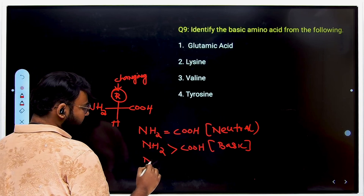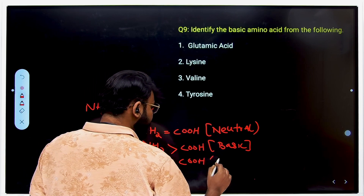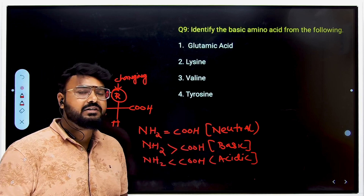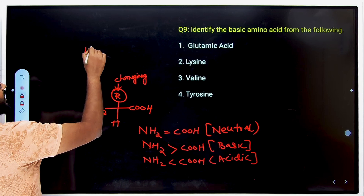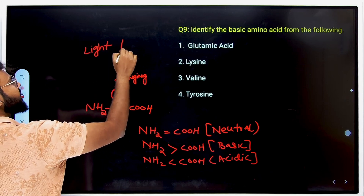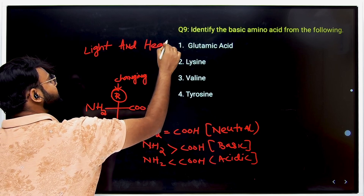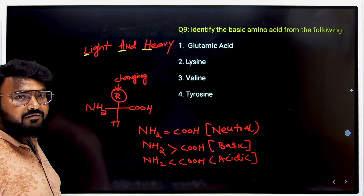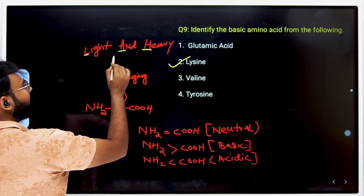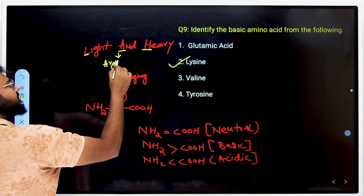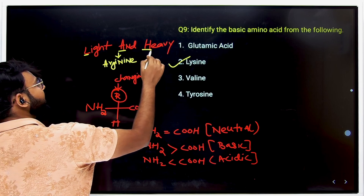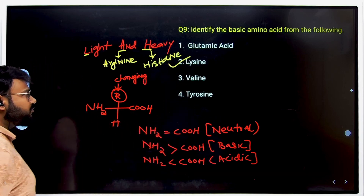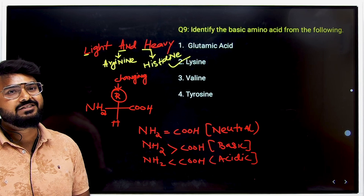When the R group has an extra carboxylic group making COOH more than NH2, it is called an acidic amino acid. A useful trick to remember all basic amino acids is the phrase 'LAH' — L for Lysine, A for Arginine, and H for Histidine. Using this, you can easily recall all basic amino acids, making Lysine the correct answer here.